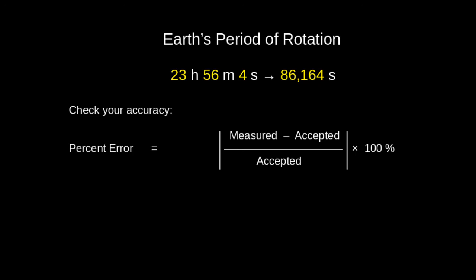The accepted value of the Earth's period of rotation is 23 hours 56 minutes and 4 seconds, which amounts to 86,164 seconds. First of all, why is this not 24 hours? It's something to think about — what is our daily period of 24 hours based on? It's not quite exactly the full rotation period of the Earth. You should check your measured value for the Earth's period of rotation against the accepted value. You can compute a percentage error as your measured value minus the accepted value, divided by the accepted value, then multiply by 100% to get a percent error.